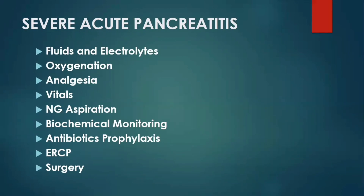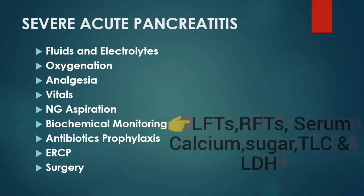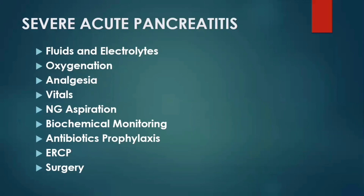In severe acute pancreatitis, first admit the patient to the ICU, then replace fluids and electrolytes, provide oxygenation, analgesia, and monitor vitals. Nasogastric aspiration and biochemical monitoring are performed, checking LFTs, RFTs, serum calcium, sugar, TLC, and LDH. Antibiotic prophylaxis is also used here. If the cause is gallstones or there are signs of cholangitis, ERCP should be performed to extract the stone from the common bile duct.